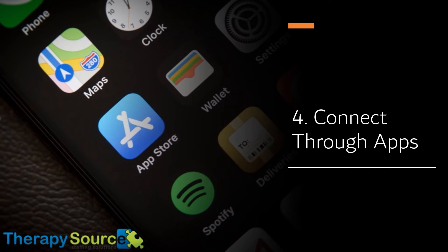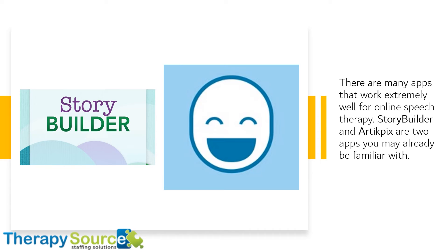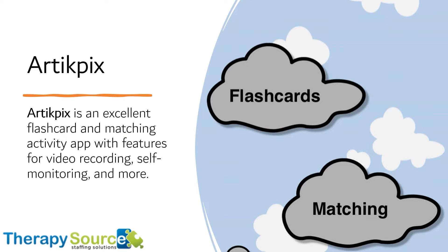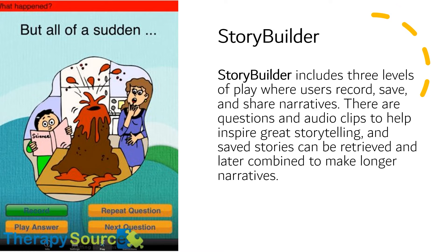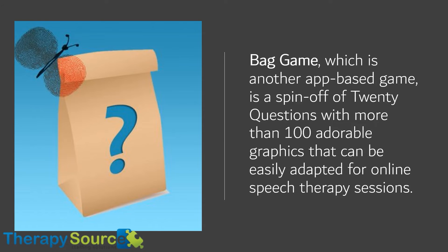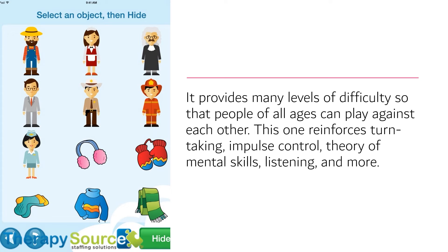Connect through apps. There are many apps that work extremely well for online speech therapy. StoryBuilder and ArcticPix are two apps you may already be familiar with. ArcticPix is an excellent flashcard and matching activity app with features for video recording, self-monitoring, and more. StoryBuilder includes three levels of play where users record, save, and share narratives, with questions and audio clips to help inspire great storytelling. Bad Game, another app-based game, is a spinoff of 20 questions with more than 100 adorable graphics that can be easily adapted for online speech therapy sessions, providing many levels of difficulty so people of all ages can play against each other.